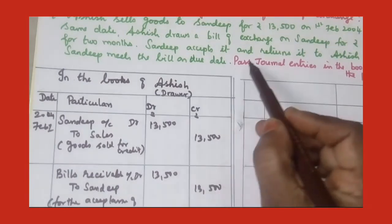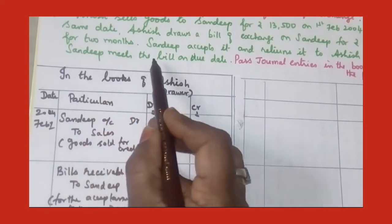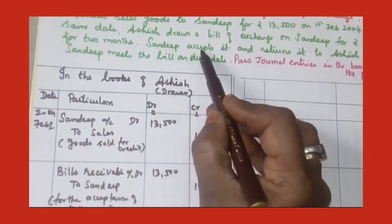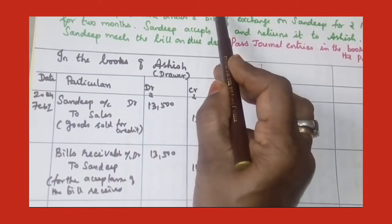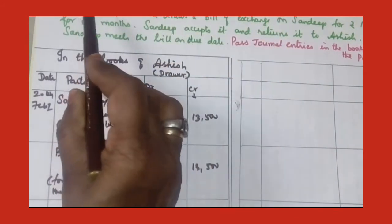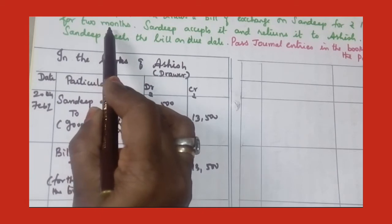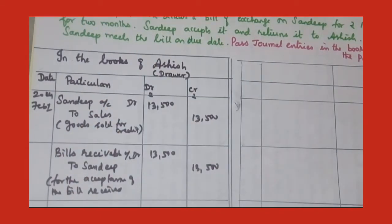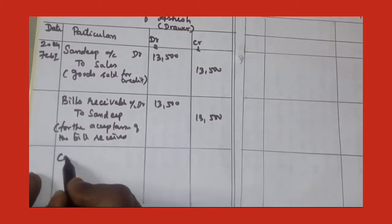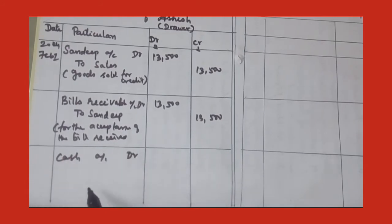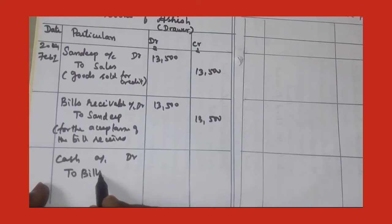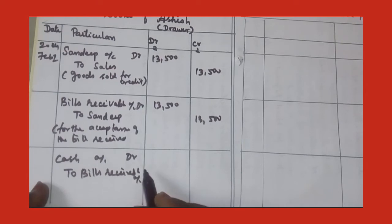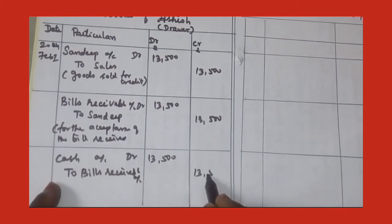The last journal entry: Sandeep meets the bill on due date, meaning the drawee is paying the amount to the drawer on the due date — that is after two months. Ashish will receive the cash, so cash account debit. When he receives the cash, the drawer has to return the bill to the drawee, so the bill goes out. For the drawer it is bills receivable, so bills receivable account should be credited. The amount is 13,500.